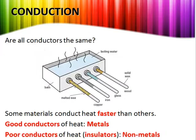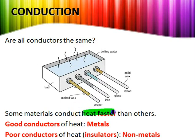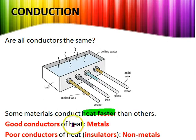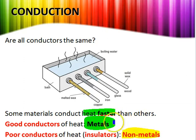Are all conductors the same? Not all conductors are the same — some conduct heat faster, some don't. We term these as good conductors and poor conductors of heat. Poor conductors are also called insulators. Good conductors of heat are metals, while poor conductors include non-metals such as wood, plastic, and air.